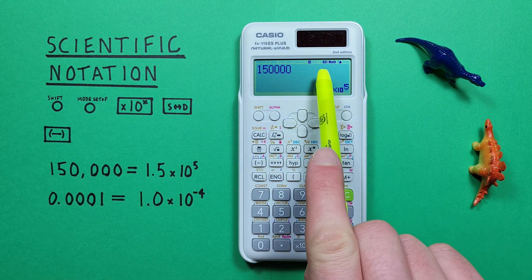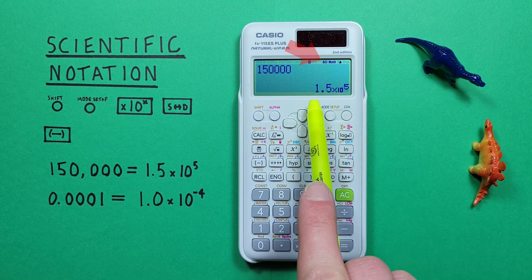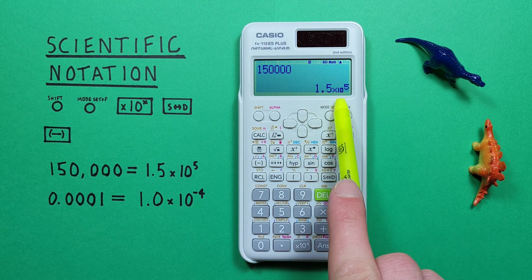And now we see an SCI on the top of our screen, letting us know we're in scientific notation mode. And our result has converted to 1.5 times 10 to the power of 5.